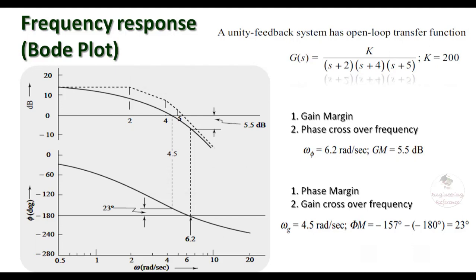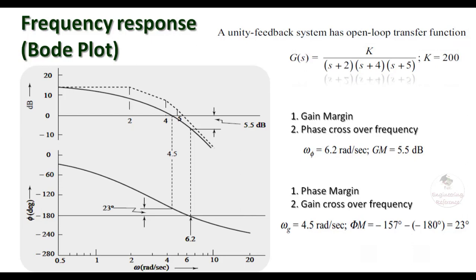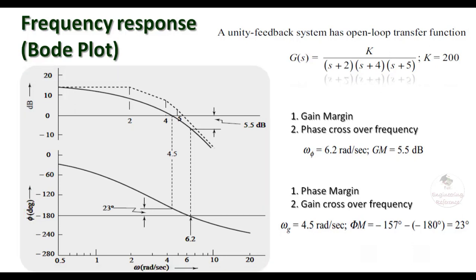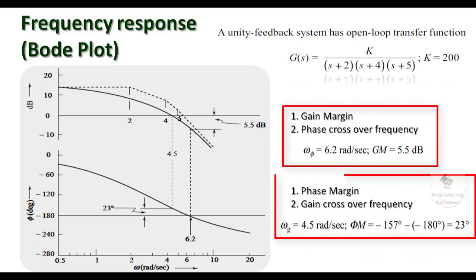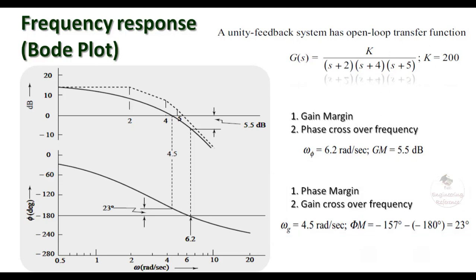Here we have a unity feedback system with the open loop transfer function G(s) = K / ((s+2)(s+4)(s+5)), where K = 200. We are not going for theoretical analysis here. The complete sketch of the magnitude plot and phase plot with respect to the frequencies are shown, along with the gain margin value at the phase crossover frequency and the phase margin value at the gain crossover frequency. This is what we are going to observe in the Scilab platform.